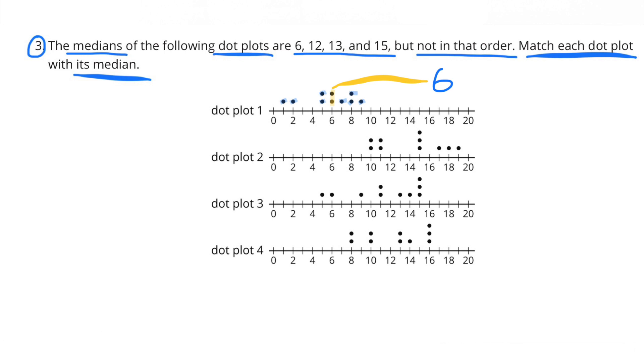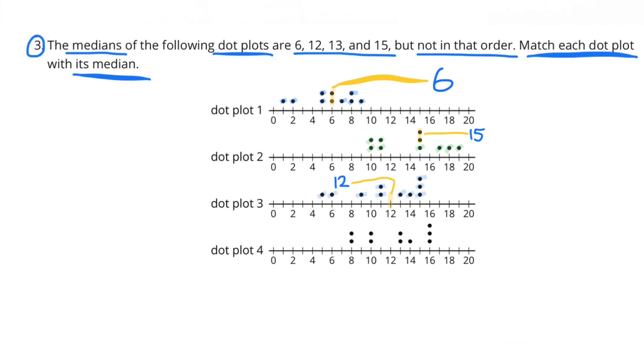Dot plot number two: we cancel out all four of the scores to the left of 15 and cross out the three scores to the right of 15 and cross out one of the scores of 15, leaving just two scores left, and those two scores are 15. So the median for dot plot number two would be 15. Dot plot number three: I've crossed out all five of the scores to the left of 12 and I've crossed out all five of the scores to the right of 12, leaving 12 in the middle. So 12 would be the median of dot plot number three.